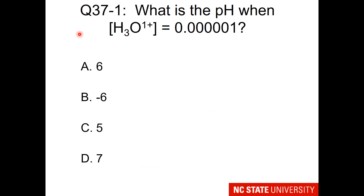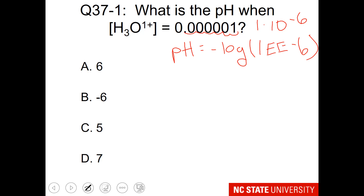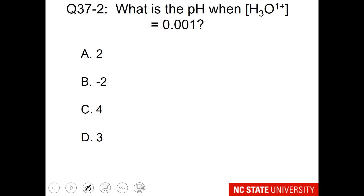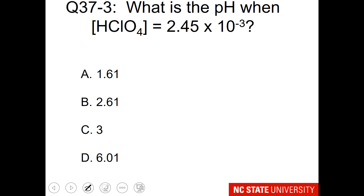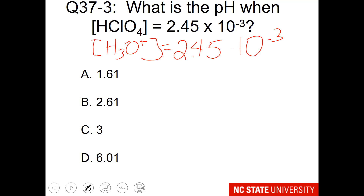Here's a question: what is the pH when the hydronium concentration is a given number? If we count how many times we need to move the decimal back so it's behind the 1, we get 1 times 10 to the minus 6, so the pH is 6. For 0.001, that's 1 times 10 to the minus 3, so the pH is 3. If you're given a strong acid like perchloric acid, its concentration equals the hydronium concentration since strong acids dissociate completely in water.